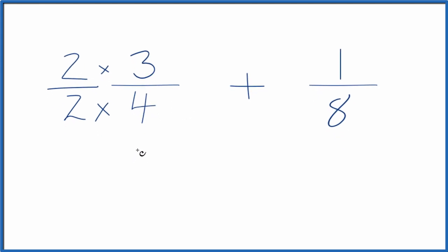So 2 times 3 is 6, and then 2 times 4 is 8. So now we have 8 in the denominator. We have the same denominators.